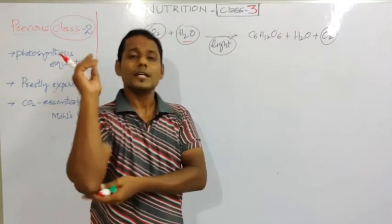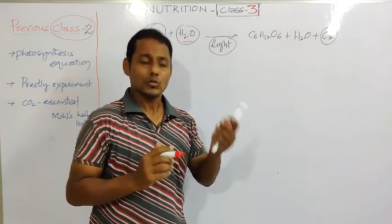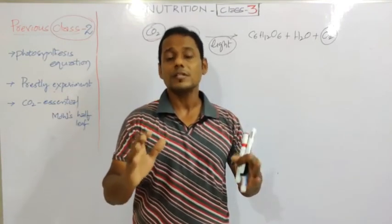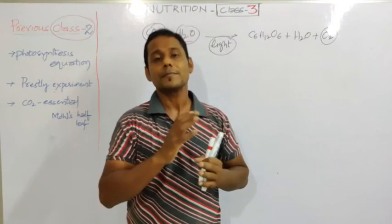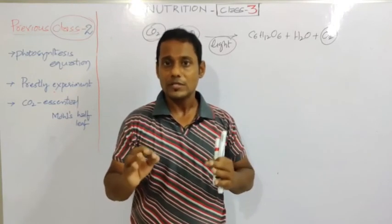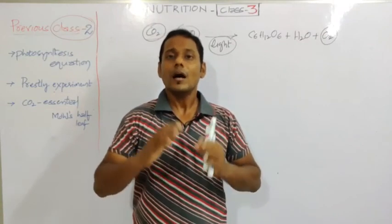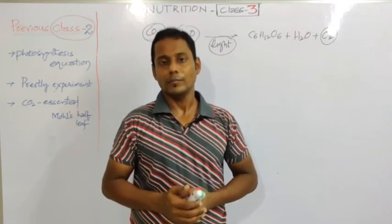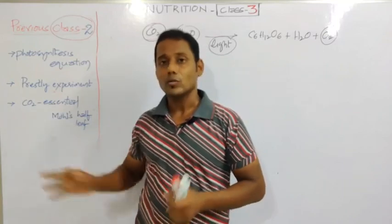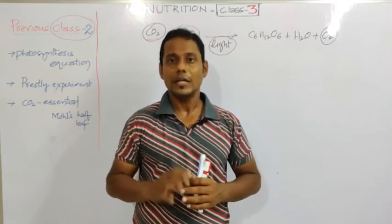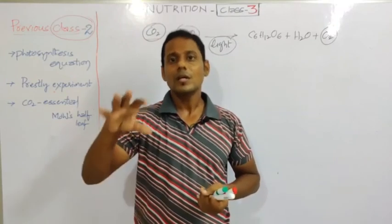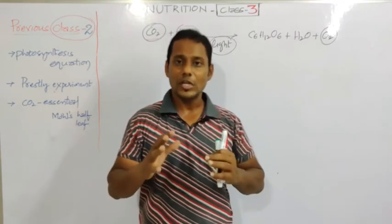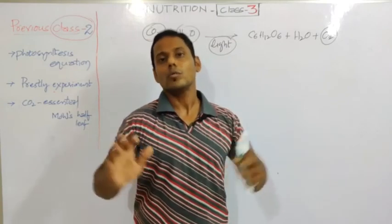Next, light is a very, very essential thing for the photosynthesis process. Now we will do another experiment. In this photosynthesis process experiment, we will show that light is essential. Just as in the previous experiment for carbon dioxide - where we used a chemical to prevent carbon dioxide from reaching the plant - here we will prevent light from reaching the plant.